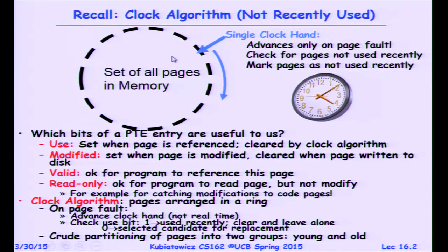The simple idea is you set the use bit to zero, and then when you come back to it later, if it's gone to a one, you know that somebody's touched it. Typically the use bit is handled by hardware, but you can handle it in software as we discussed.